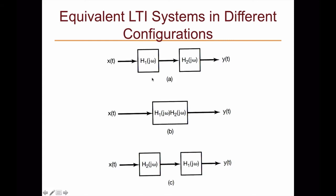With that property, if we have systems in a cascade configuration, the total frequency response of two cascaded systems equals the multiplication of the first frequency response with the second. This also suggests that you can swap the order of H₂ and H₁, because either way the output y(t) passes through both filters.